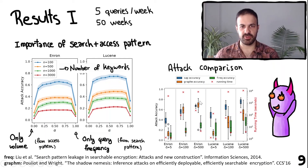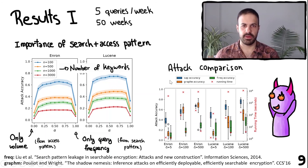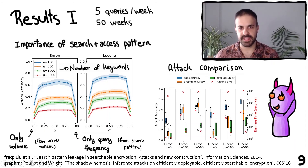The red crosses show the running time displayed on the right y-axis, which is in logarithmic scale. Our attack is approximately two orders of magnitude faster than the graph matching attack. The reason we ran this experiment with 500 keywords rather than 3000 is that the graph matching attack would be infeasible at that scale. Therefore, we conclude that our attack outperforms the other attacks.